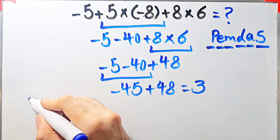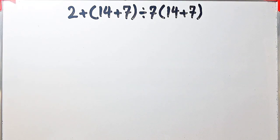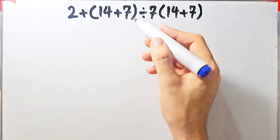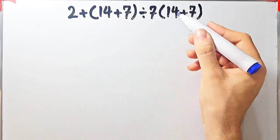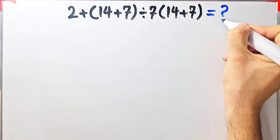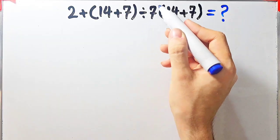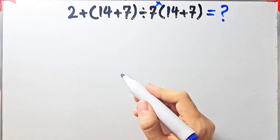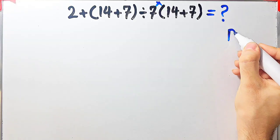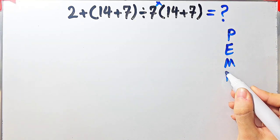Let's solve another question about the PEMDAS rule: 2 plus open parenthesis 14 plus 7 close parenthesis divided by 7, then times open parenthesis 14 plus 7 close parenthesis. In this question we have addition, parentheses, division, and multiplication. To solve it, we need to follow the order of operations — PEMDAS. If you don't pay attention to this rule, you get the wrong answer.